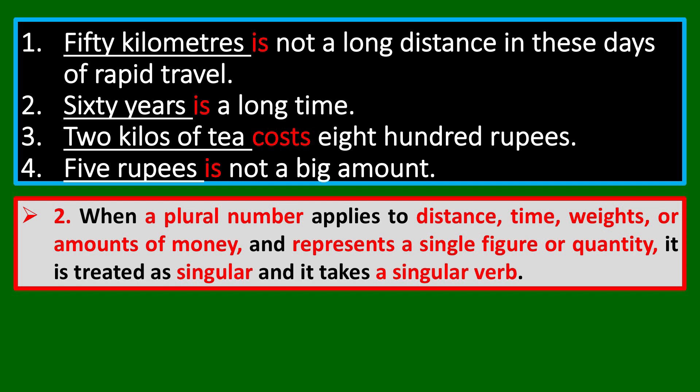60 years is one unit of time. 50 kilometers is one unit of distance. 2 kilos is one unit of weight. 5 rupees is one unit of money. When we think of these as a single unit — one duration, one distance, one amount — they are treated as singular in form and take a singular verb. So whenever we talk about time, weight, or money as a single unit, we use the singular verb.